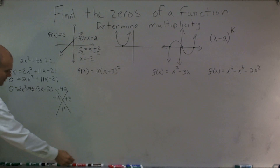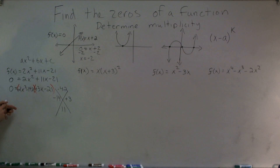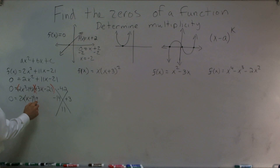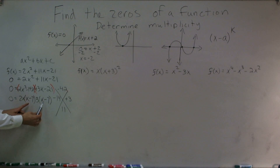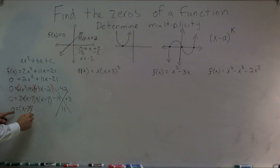Now I'm going to factor by grouping — I'll group the first two terms and the last two terms. Out of my first two terms, I can factor out 2x and I'm left with x minus 7. And here I can factor out a 3, and I'm left with x minus 7. Therefore, I can factor out x minus 7, giving me 0 equals x minus 7 times 2x plus 3.